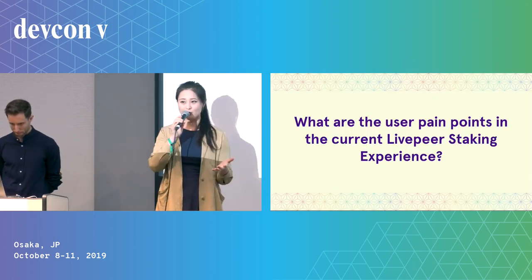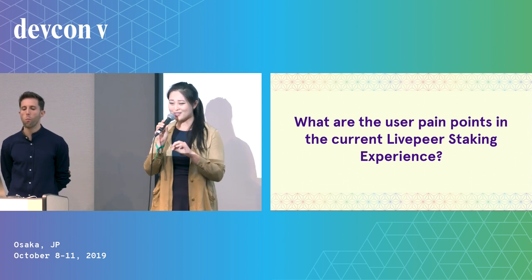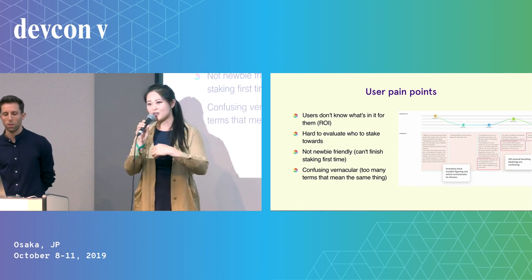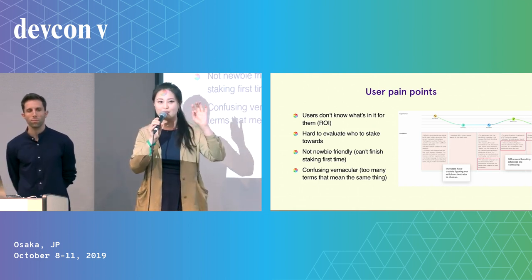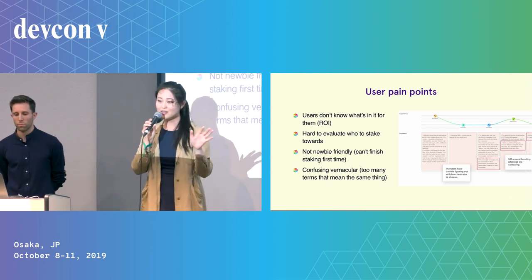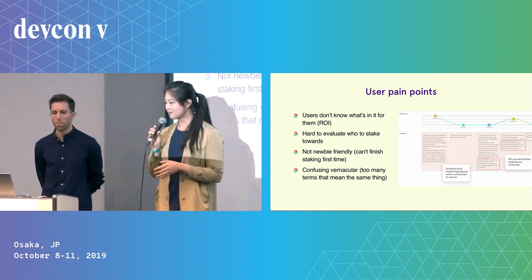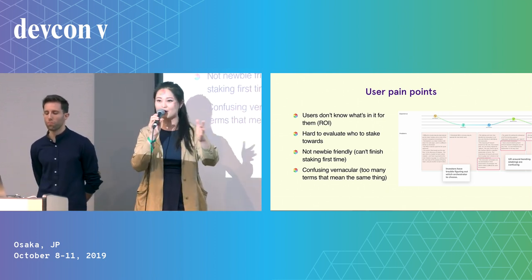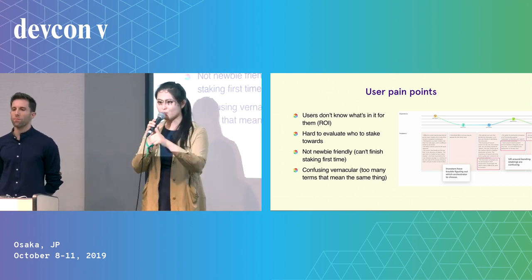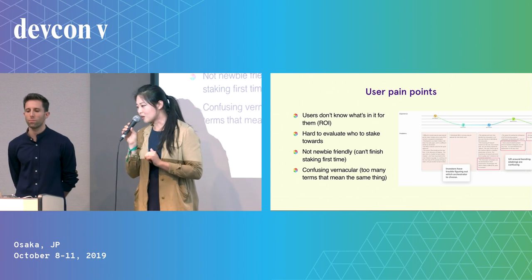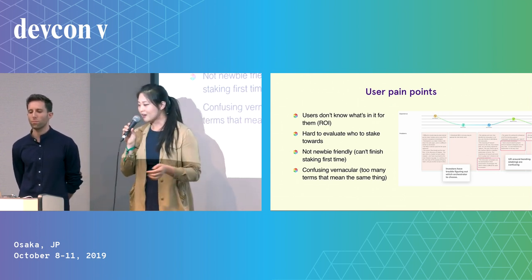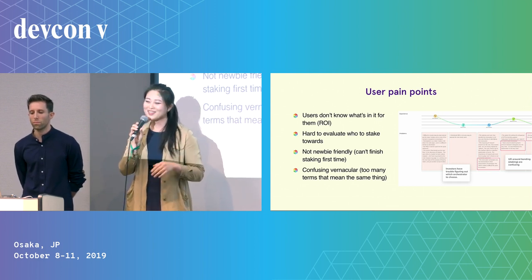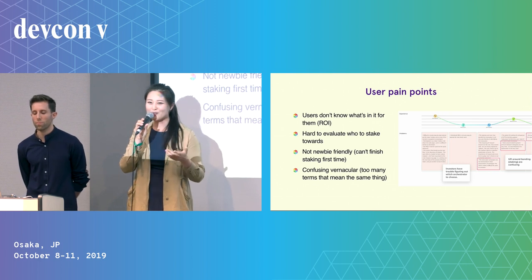Most importantly, we really wanted to figure out the user pain points — that's key to all of our design decisions. We constructed a user journey from beginning to end, from when they first engaged with Livepeer as a brand all the way to when they staked a token. Problems we surfaced: people don't understand the ROI, they don't understand how to evaluate who to stake towards, they can't finish the first staking experience, and the confusing terminology detracts greatly from the experience.